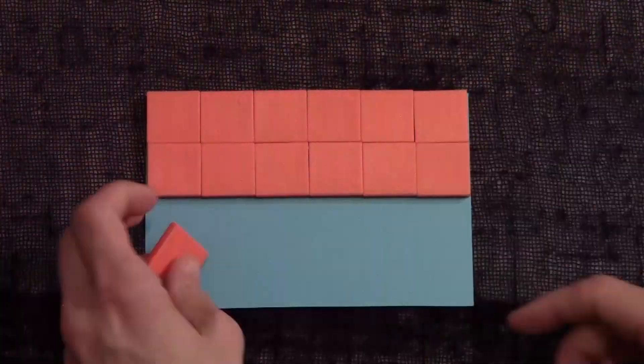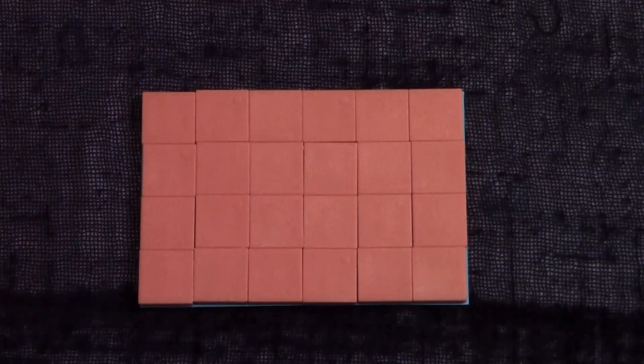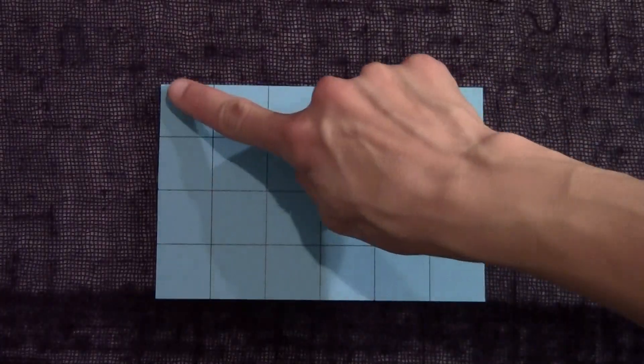Area equals length times width, and that tells us how many square units are inside the rectangle. Rectangles are a cinch because of all those right angles.